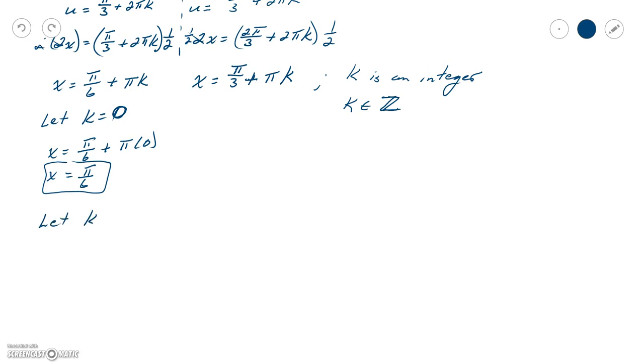What happens if we let k equal 1? Well, if we let k equal 1, then x equals π over 6 plus π times 1. Well, that's the same thing as π over 6 plus 6π over 6. So x equals 7π over 6, which is between 0 and 2π, so that's another one of my solutions.